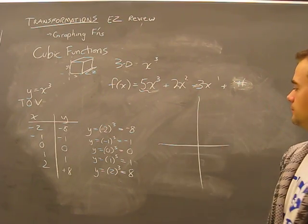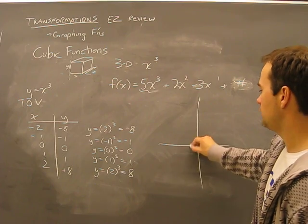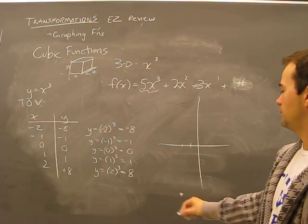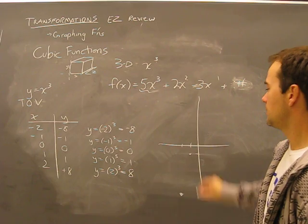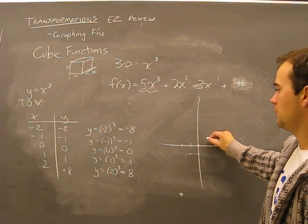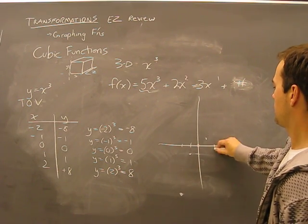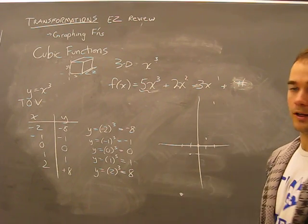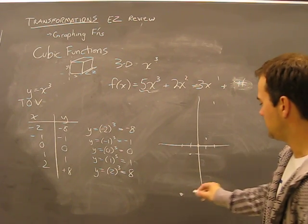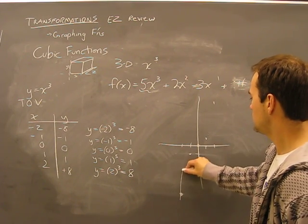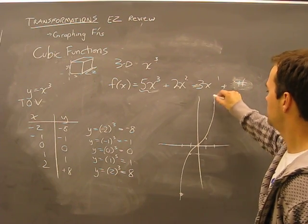Here's what it looks like. Plot our points. Minus 2, minus 8, somewhere down here. Minus 1, minus 1, somewhere there. 0, 0, 1, 1, 2, 8, somewhere like that. It's just that easy. Connect the dots. Just like you did in kindergarten. There you go.